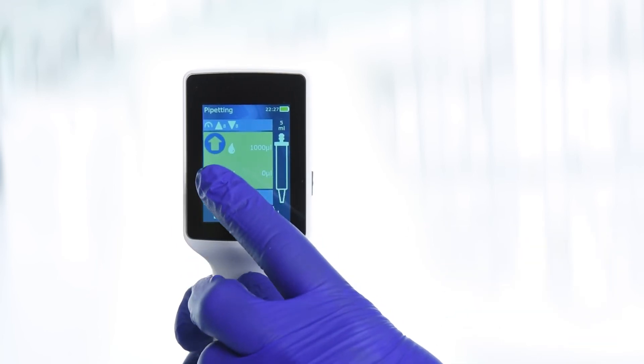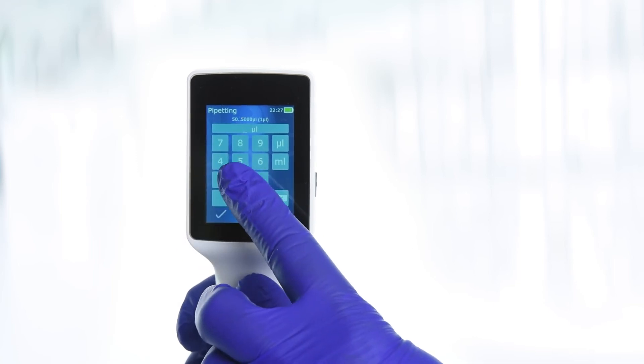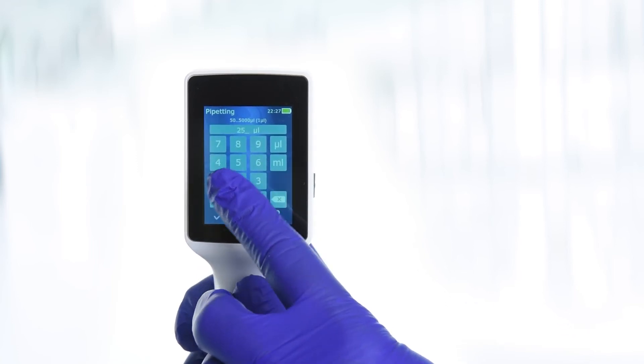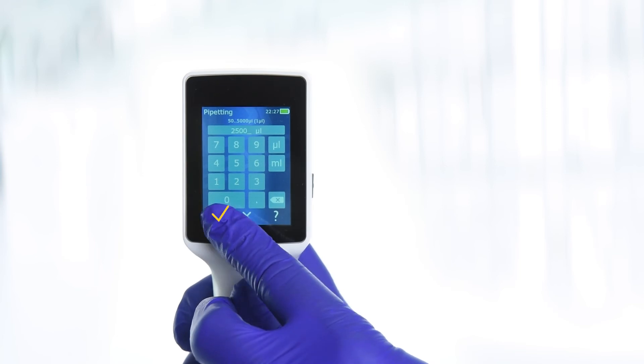To set the desired dispensing volume, tap the water droplet icon. Type in the desired dispensing volume using the keypad. Then tap to confirm.